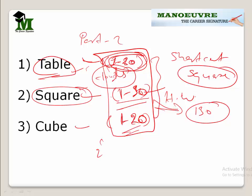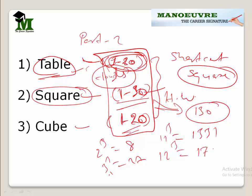Cube examples: 2 cubed is 8, 3 cubed is 27. If I ask you 11 cubed, it is 1331 — you need to memorize this. 12 cubed is 1728. Likewise, 9 cubed is 729. These are the values from 1 to 20 which you have to buy by heart.